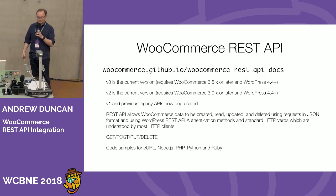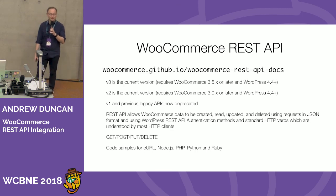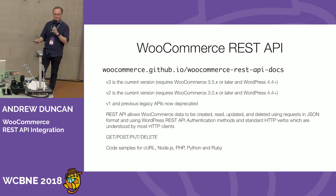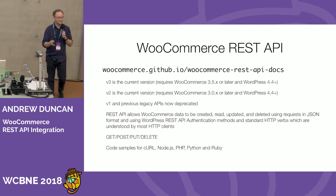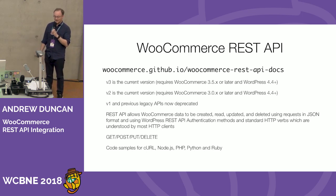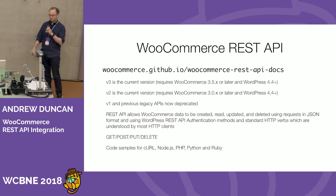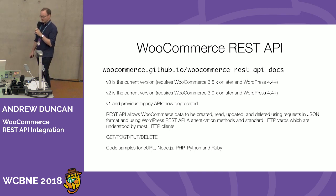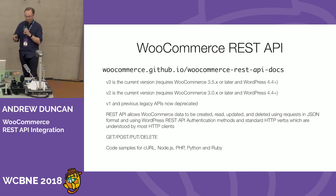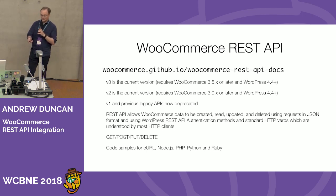It's a RESTful API, letting us make requests using standard HTTP verbs like GET, POST, PUT, and DELETE. That allows us to create, read, update, and delete information all from outside of WooCommerce using the API. There are code samples for many popular programming languages — Node, PHP, Python, Ruby — and some official SDKs you can download and get going with straight away.